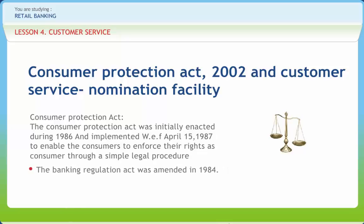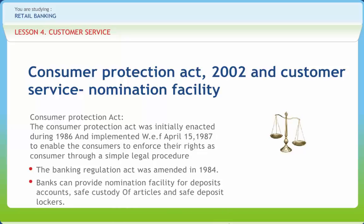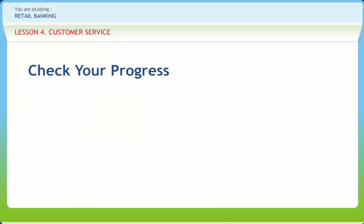The Banking Regulation Act was amended in 1984. Banks can provide nomination facility for deposit accounts, safe custody of articles, and safe deposit lockers. Quality Functional Deployment is a system for translating specific customer wants and needs into specific product and service requirements. Now let us check if we have understood the various concepts discussed in this lesson clearly.